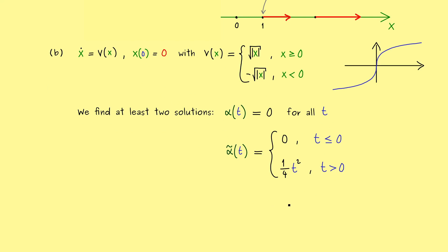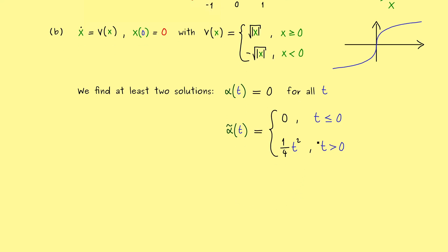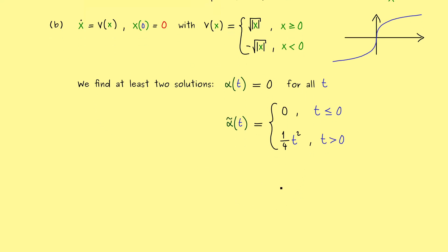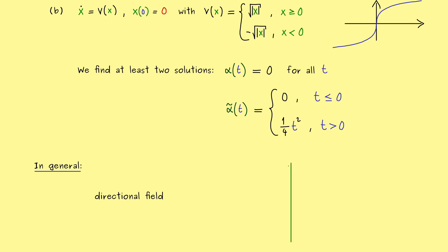So in summary, we can say we have two solutions that fulfill the initial value problem and they are obviously not the same. And in fact, for our theory, it would be nice if we could exclude such strange behaviors. So in general, we want to have the existence and the uniqueness of a solution of a given initial value problem. This means the vector fields v have to be nice enough such that we have that. In other words, our directional field should get us these informations.